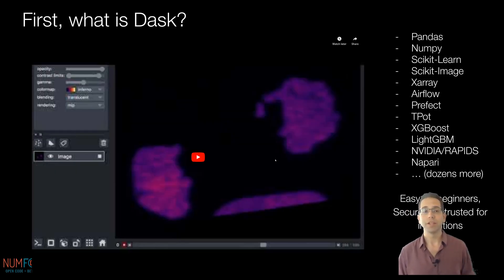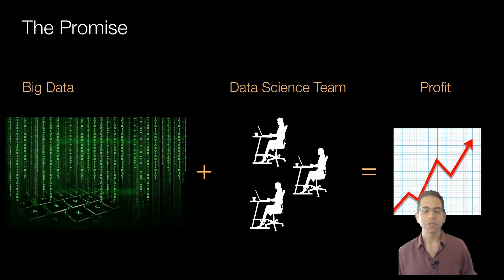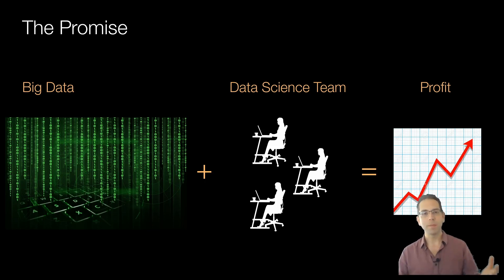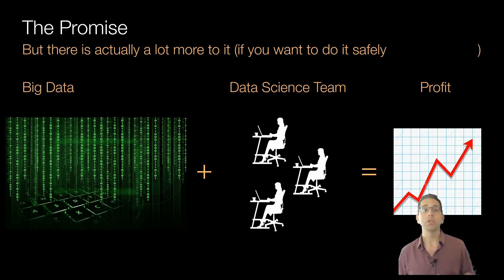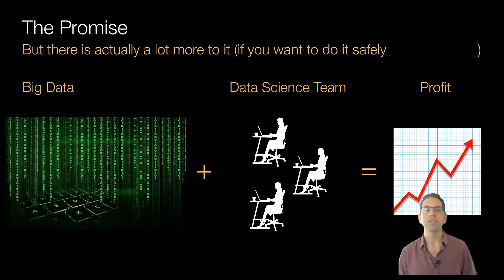Because of that, Dask is used all over the place and is often deployed in lots of different kinds of institutions — and that's where we come to our challenges today. When we give those talks, we have this promise: you have a big pile of data, a data science team, and you profit. That's the general promise that authors of data science libraries often make. But there's actually a lot more to the story if you actually want to do this safely in an organizational setting. You can do this on your own in an academic setting. But if you want to invite teammates, if you actually care about budget, if you work in a government lab, for example, you're going to want to do a bit more.